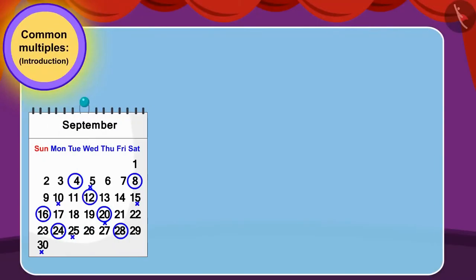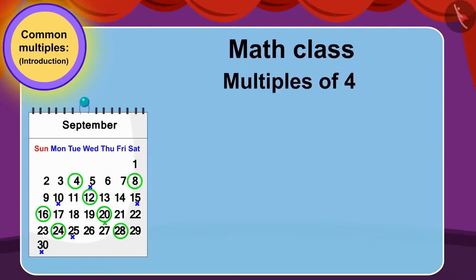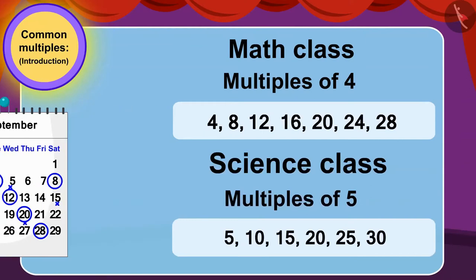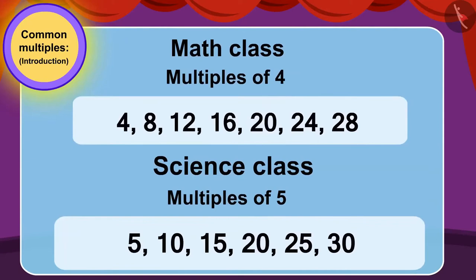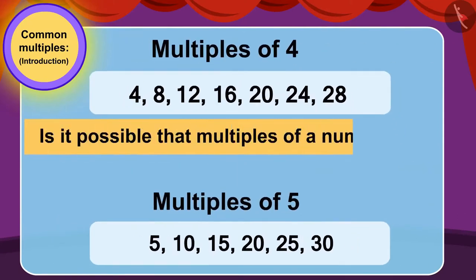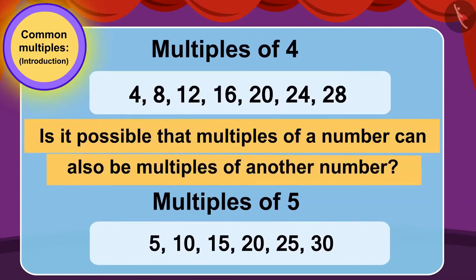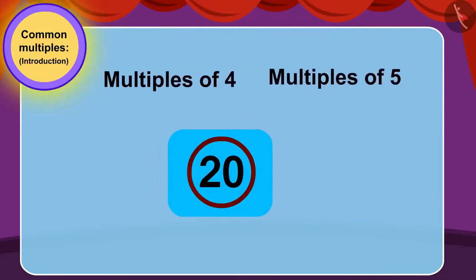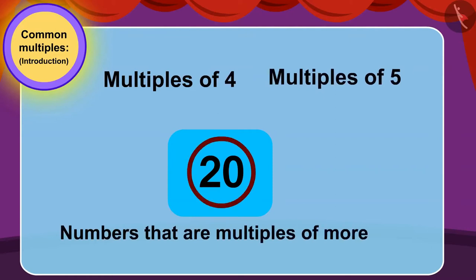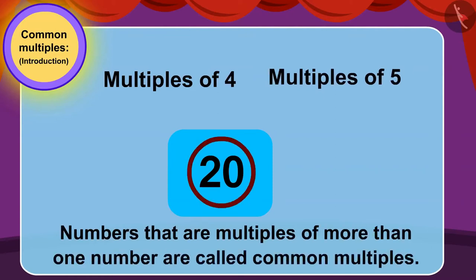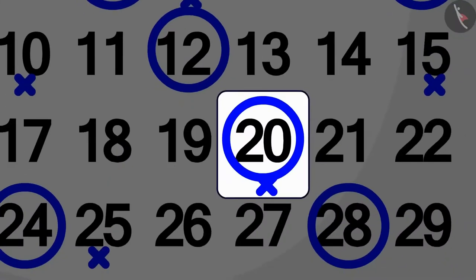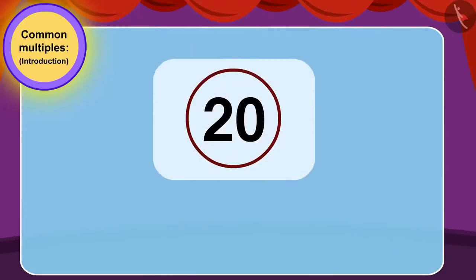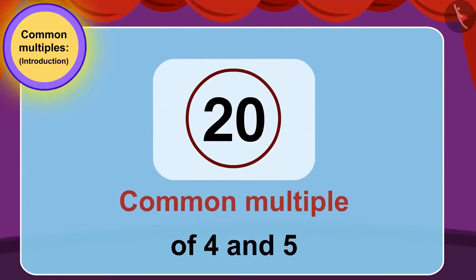Children, we can see that Bablu's math class dates are multiples of four and his science class dates are multiples of five, and 20 is a multiple of both numbers. Is it possible that multiples of a number can also be multiples of another number? Yes, it is quite possible that a number is a multiple of more than one number. Numbers that are multiples of more than one number are called common multiples. Here, on the 20th, Bablu will have both mathematics and science classes. In other words, 20 is a common multiple of both 4 and 5.